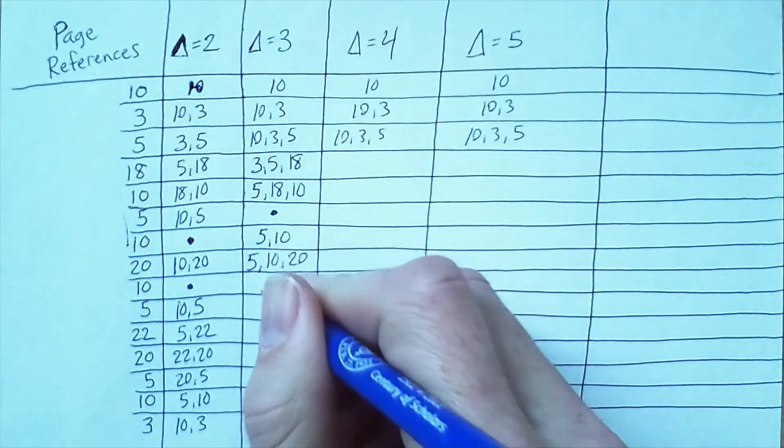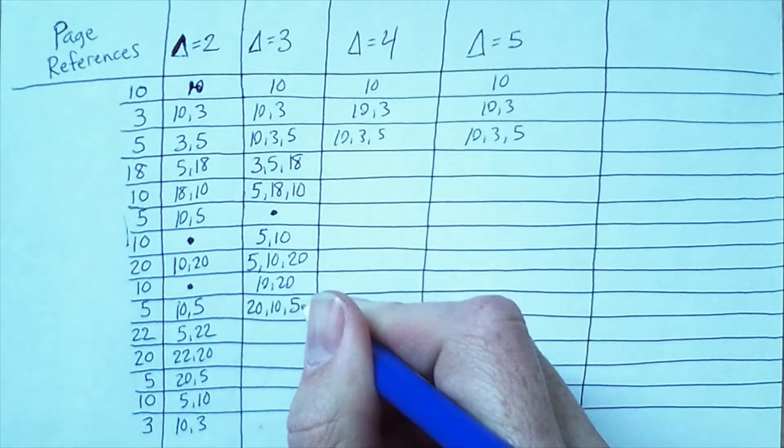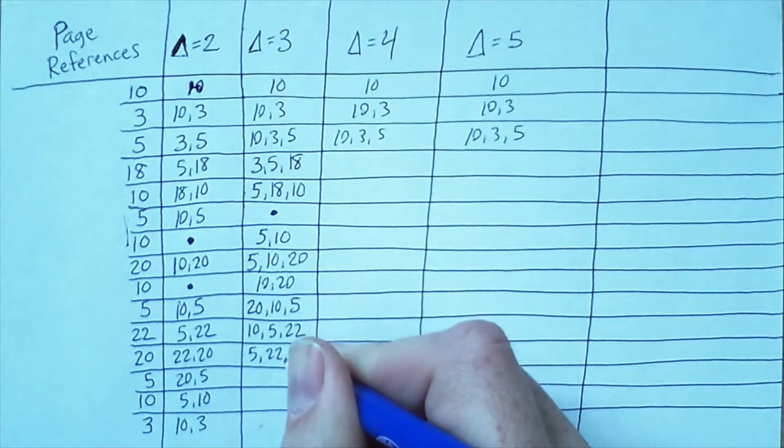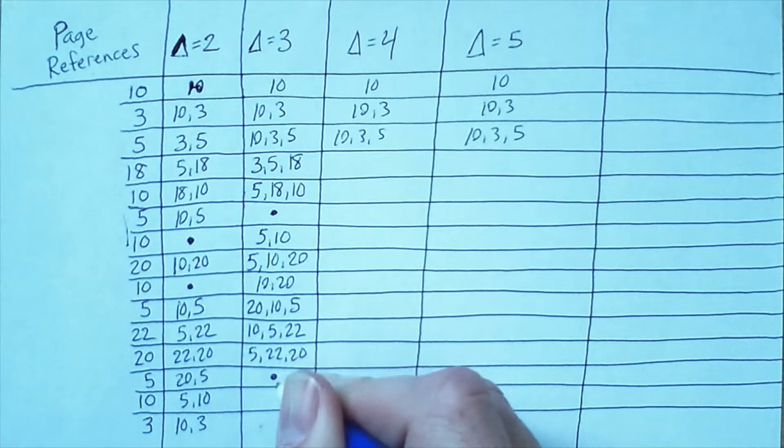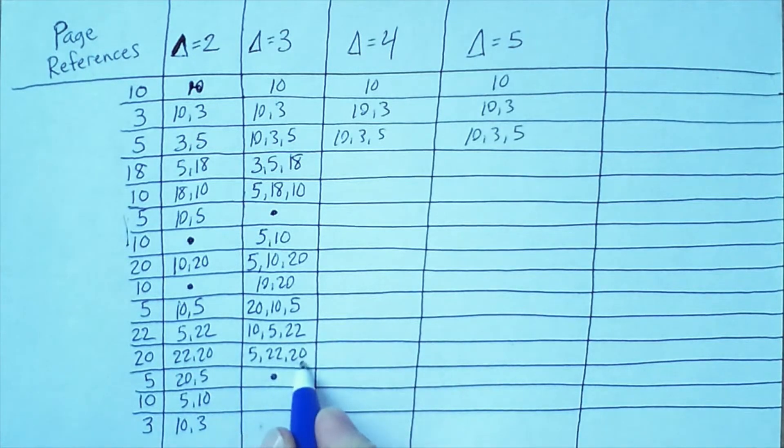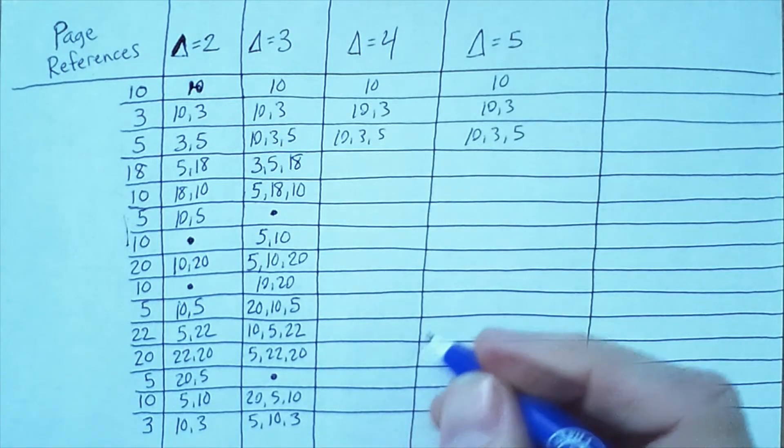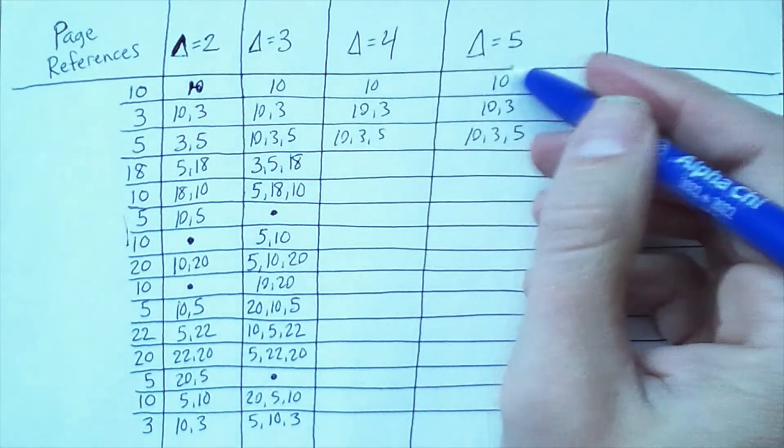Naturally, as delta gets larger, we can store more elements in our set. And it actually turns out that for larger values of delta, the smaller values will always be a subset of the larger values. So here these sets are equal, those sets are equal.